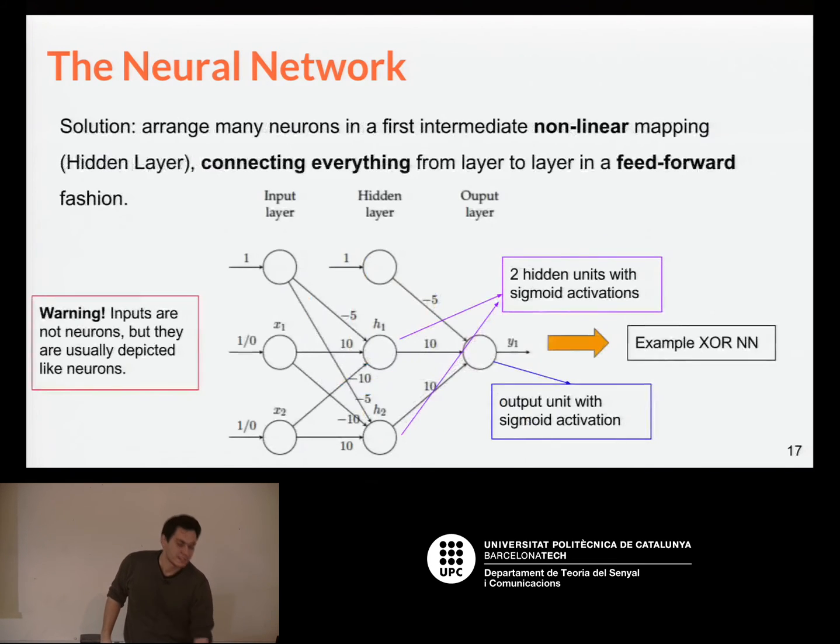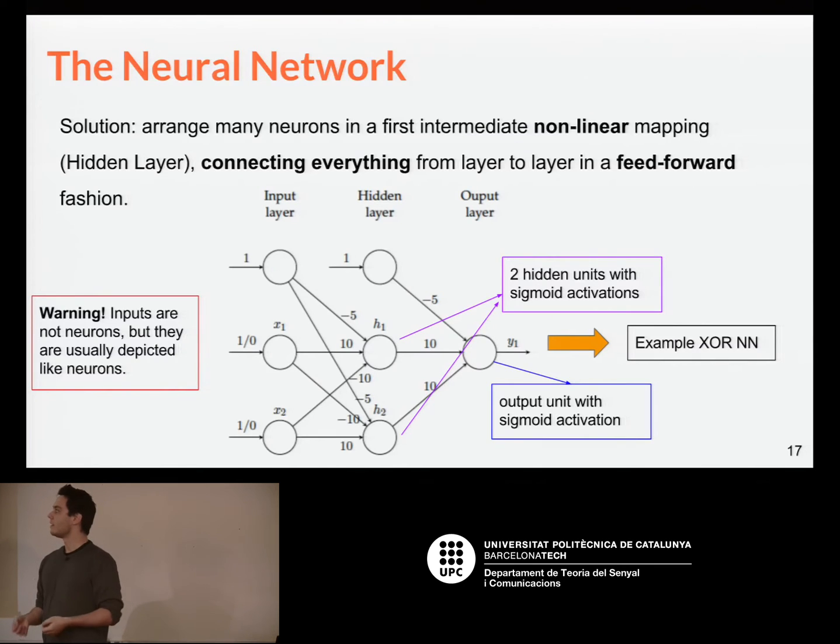What happens is that we have to include some intermediate processing layer, some complex mapping in between our inputs and the decision, such that the decision layer has an easier life to decide. And to do so, we place what's called a hidden layer of neurons.